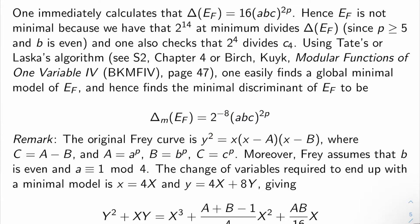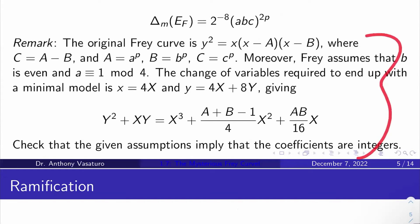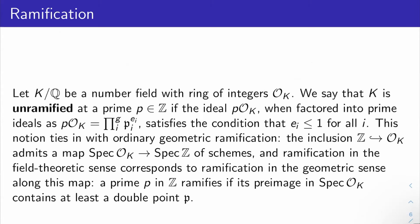And I talk a little bit about here, if you want to pause and see how Frey did this originally, like what the changes of variables you need are to actually go from the given model to the global minimal model. And it's the fact that b is even, and that a is -1 mod 4 that allows you to see that these coefficients are actually integers, for example. So just a little touch of number theory for you here.